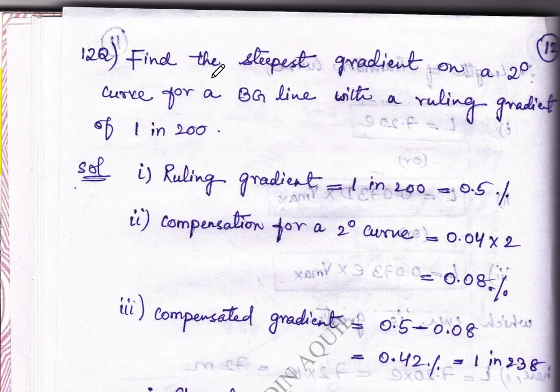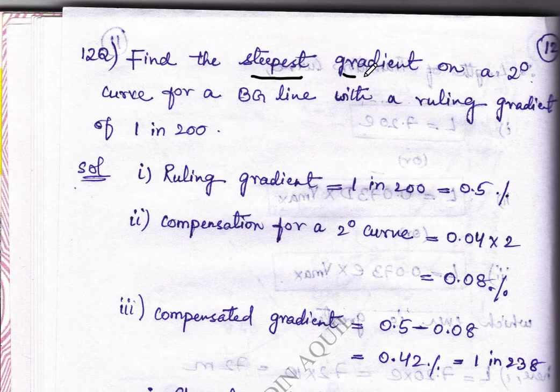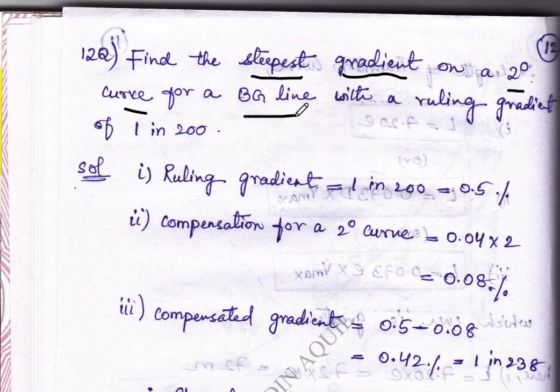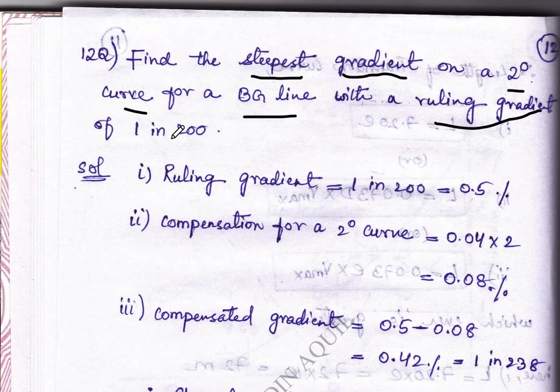Now, in today's problem, we will see how to calculate the steepest gradient on a curve of 2 degrees for a BG line with rolling gradient which is given.